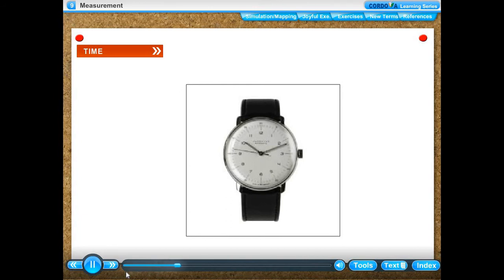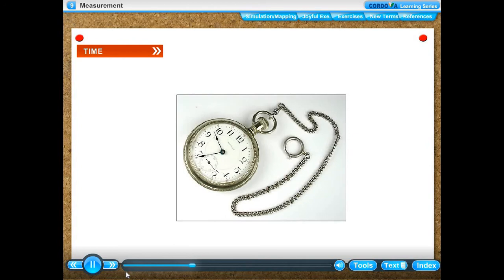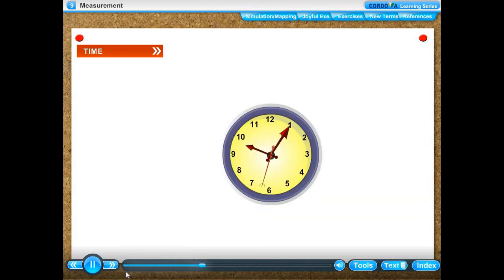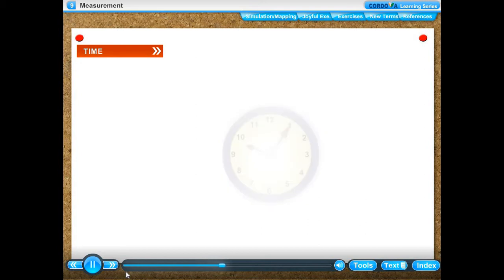We use a watch or clock to measure time. A clock or watch has three hands. The short hand reads hours, called the hour hand.